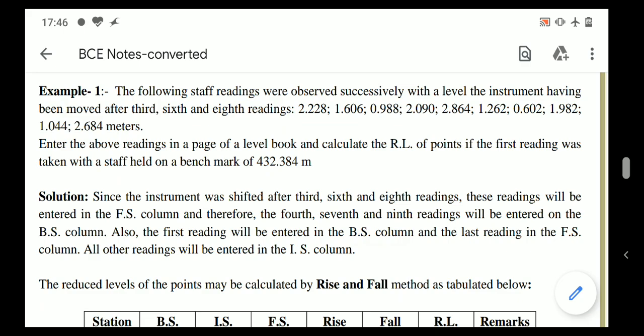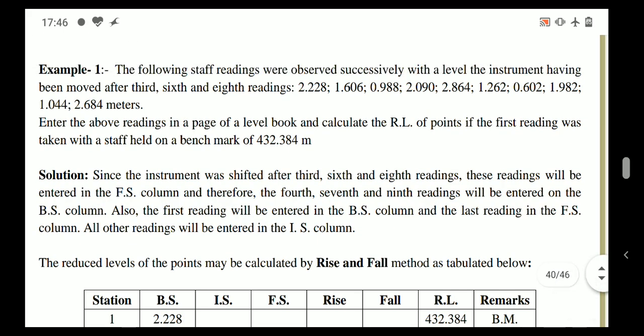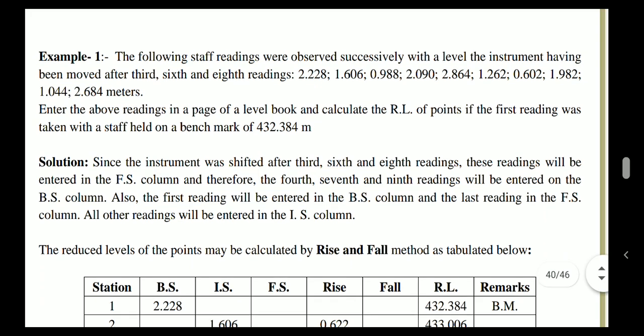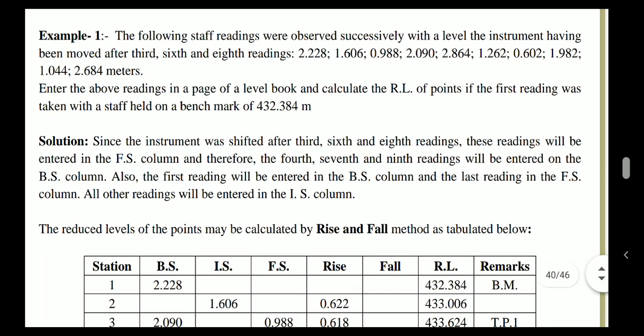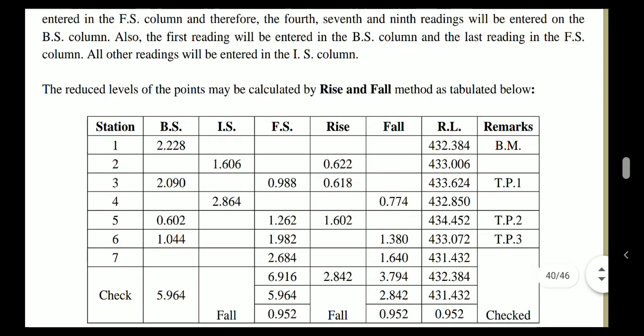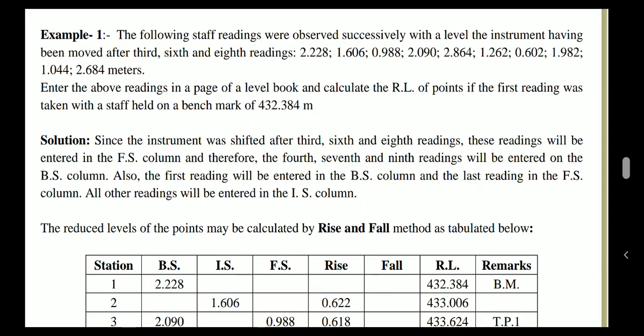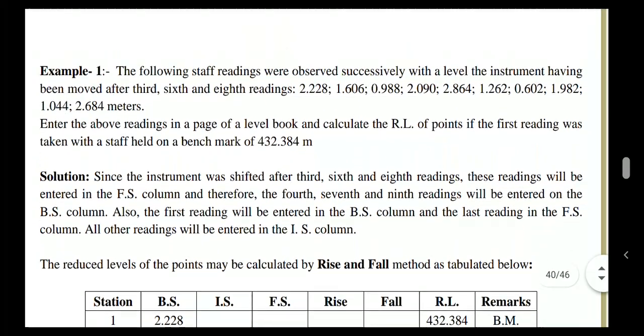When the instrument is shifted, the last reading taken before shifting is always a fore sight reading. This is because just before shifting the instrument, you take the last reading of the farthest visible staff position, which is noted in the fore sight column. Similarly, the last reading among all 10 readings — that is 2.684 — will also be a fore sight reading, noted in the fore sight column.